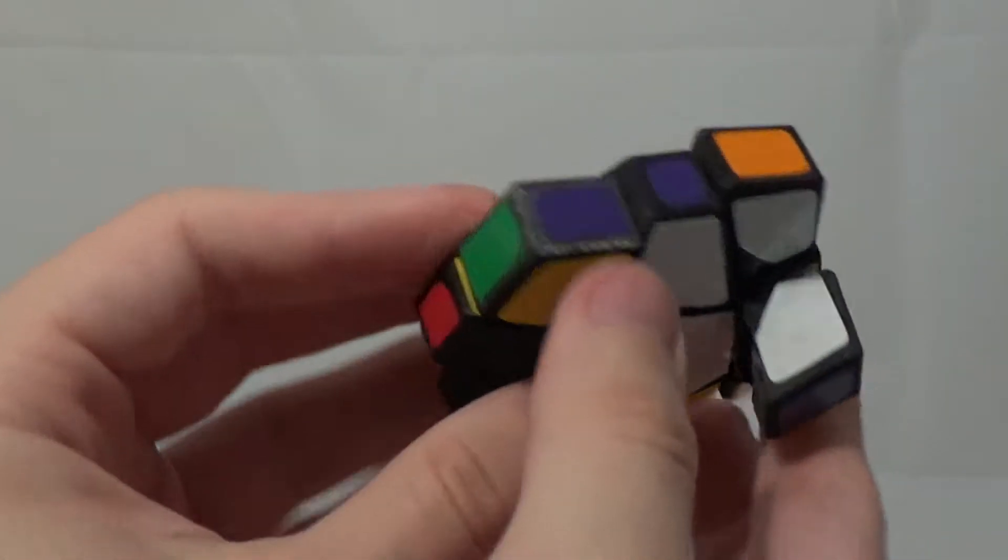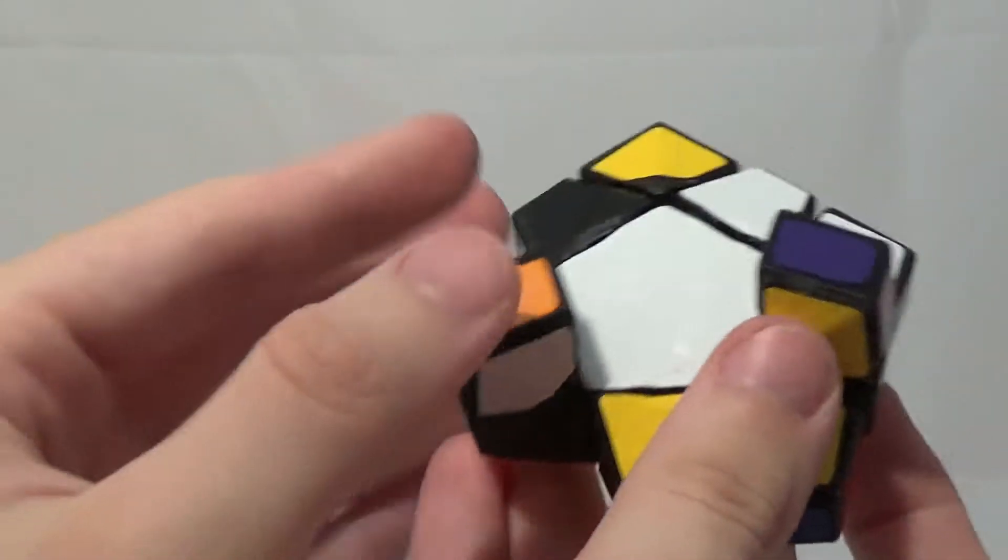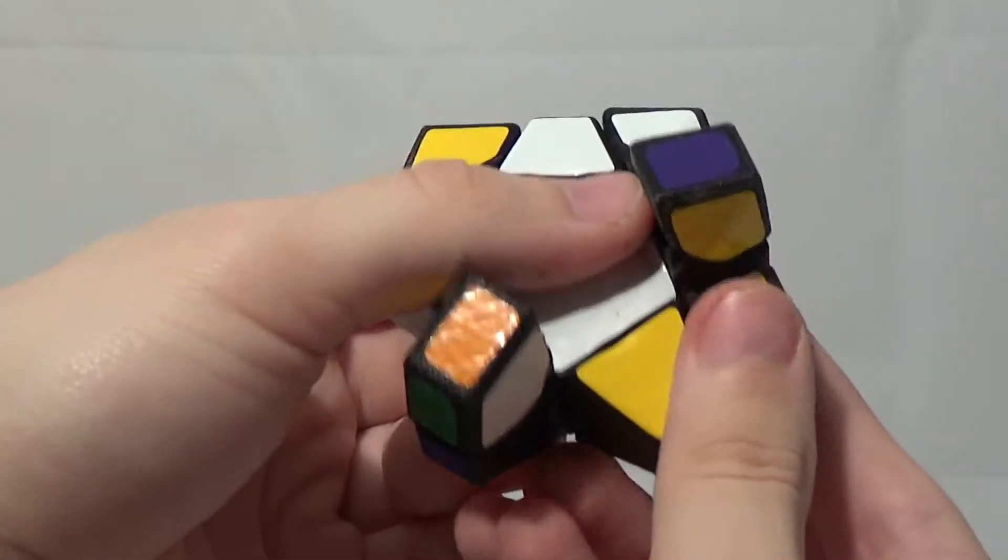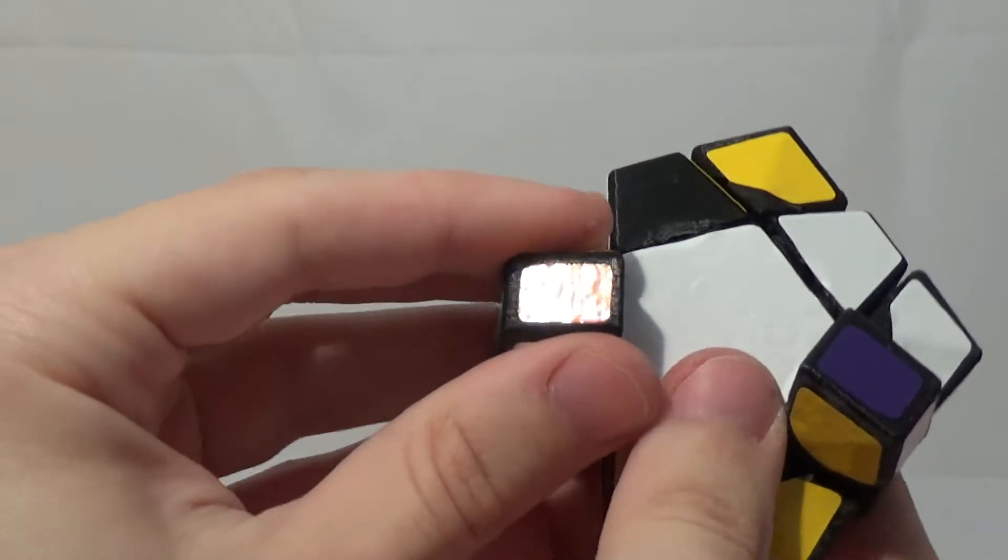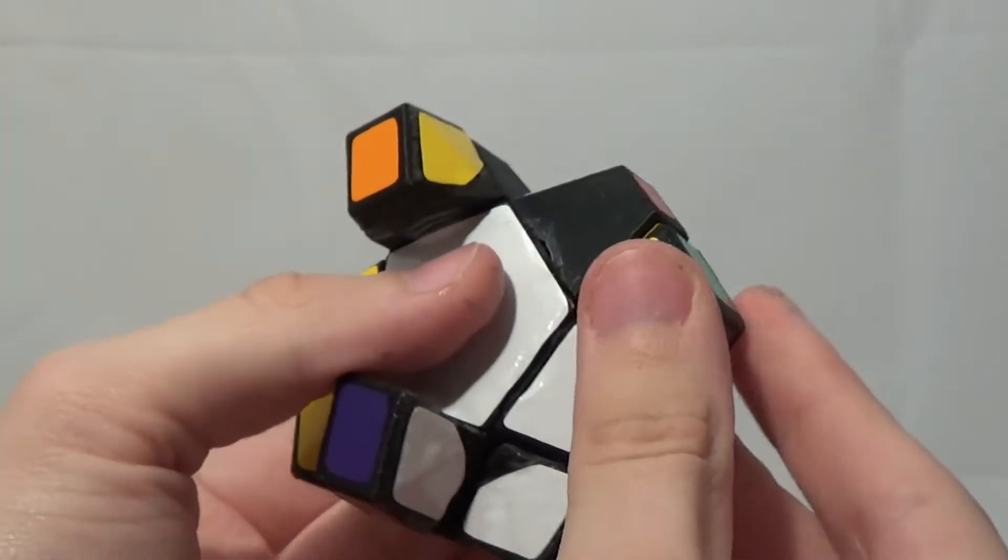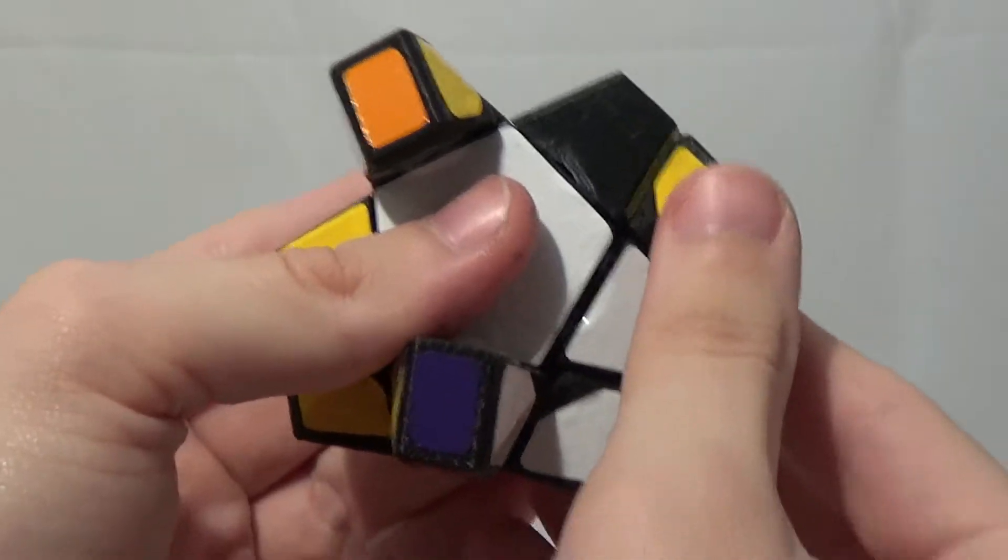It does turn worse, so just bear with me. Alright, so, looks like a good scramble to me. So I'm going to solve this like I solve a super floppy cube. And that means that the first step is to get it back to a pentagonal prism.